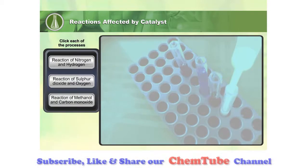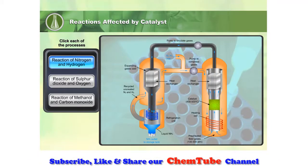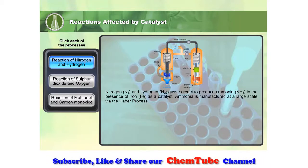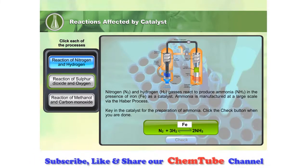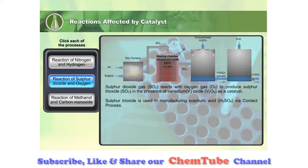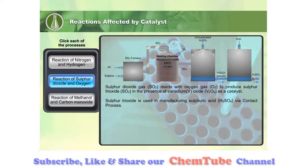Click each of the reactions to learn more. Nitrogen and hydrogen gases react to produce ammonia in the presence of iron as a catalyst. Ammonia is manufactured at a large scale via the Haber process. Key in the catalyst used in the preparation of ammonia. Sulfur dioxide gas reacts with oxygen gas to produce sulfur trioxide in the presence of vanadium(V) oxide as a catalyst. Sulfur trioxide is used in manufacturing sulfuric acid via the contact process.